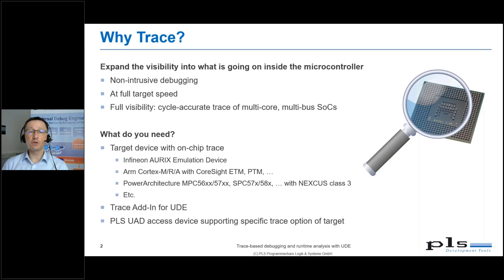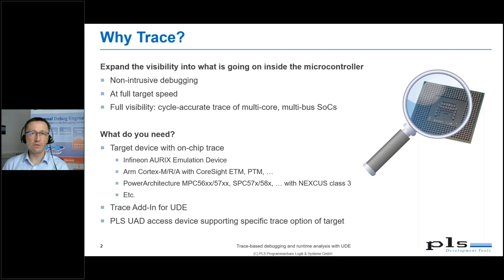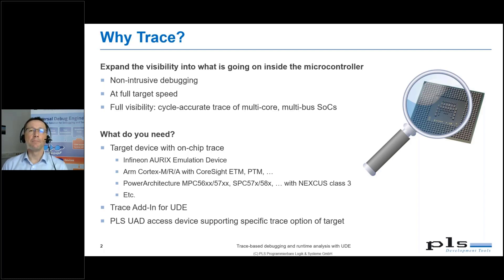To make use of the trace functions, you need a target device with on-chip trace. There are a lot of devices on the market that provide these options. For example, the Infineon ORIX with MCDS — for that device, you need a specific emulation device to get the trace option. For ARM, there are many Cortex-based devices that provide more or less powerful trace options. The keyword here is ARM CoreSight ETM or PTM — ETM stands for Embedded Trace MacroCell and PTM for Program Trace MacroCell. Also, devices from the Power Architecture, from ST or NXP, provide trace support based on Nexus.